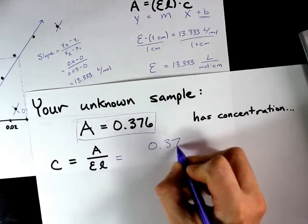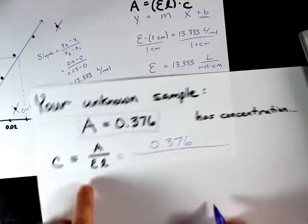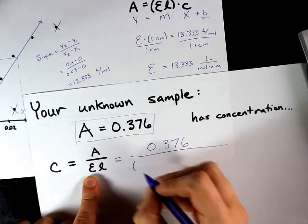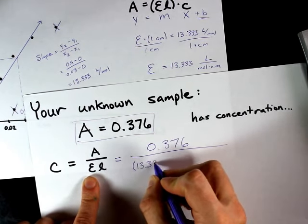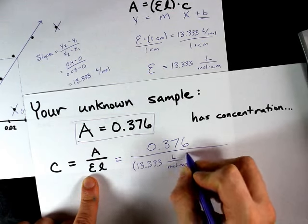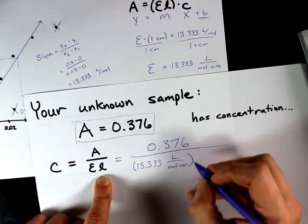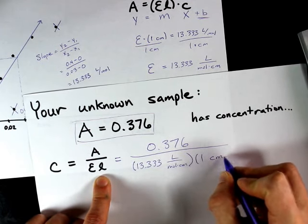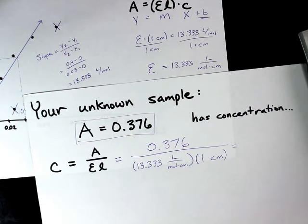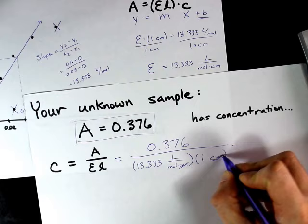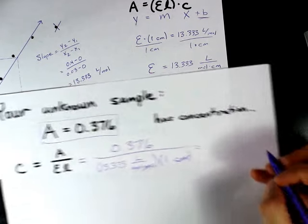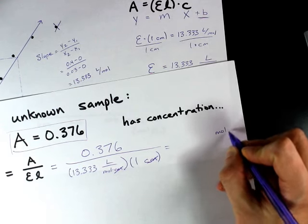Absorbance is unitless. It goes on top. Molar absorptivity is what you calculated from the slope of your standard curve. For me, it was 13.333 liters over moles centimeters. And again, L path length is almost certainly one centimeter for you. You can plug this into your calculator. Centimeters cancels with centimeters. And because I have liters per mole in the denominator, my units here are going to be moles per liter.